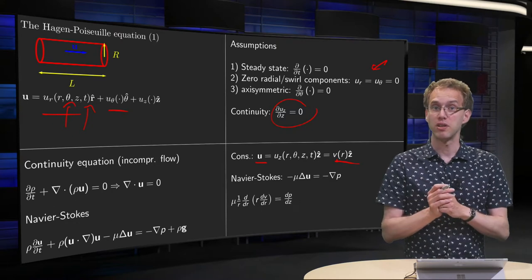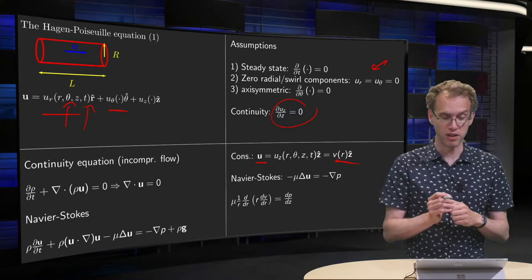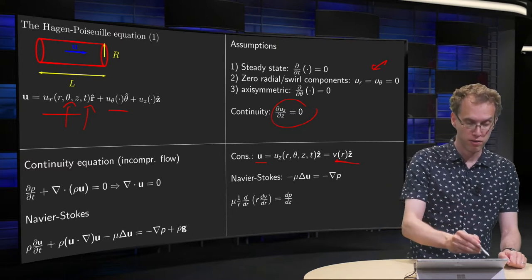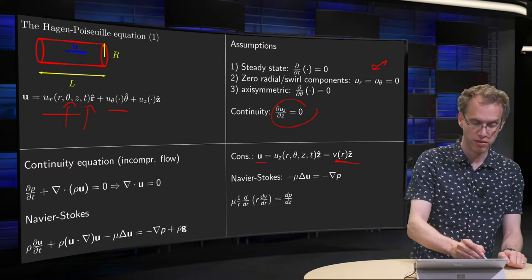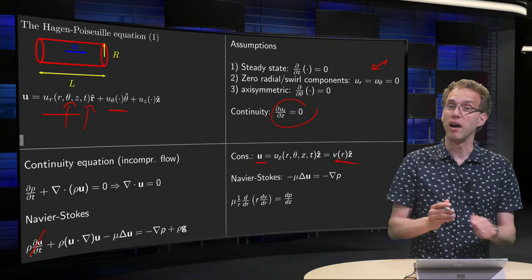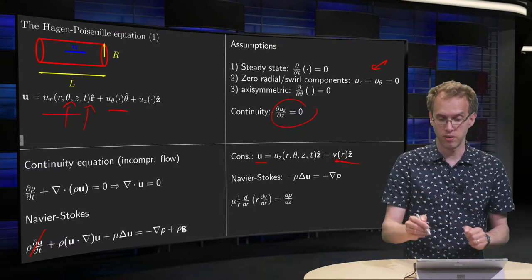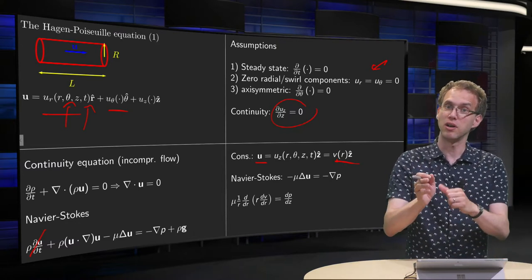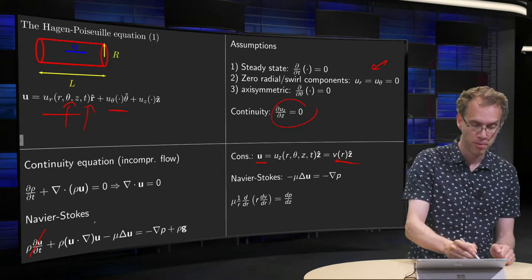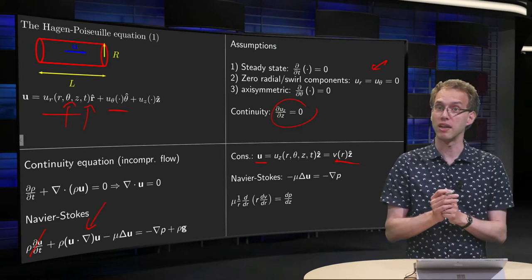And with this simplification Navier-Stokes also simplifies a lot. First of all, the temporal derivative cancels out, due to the fact that we have something in the z-direction only depending on r. This term over here also cancels out, so we have this term left over here.